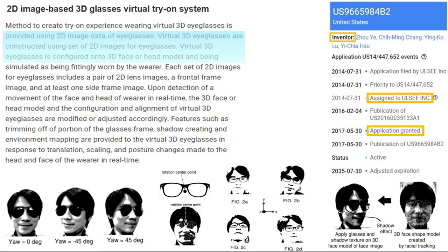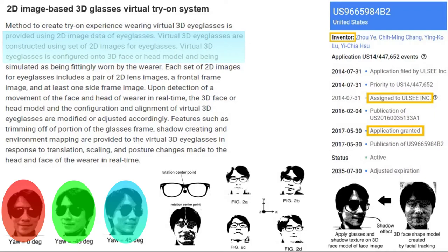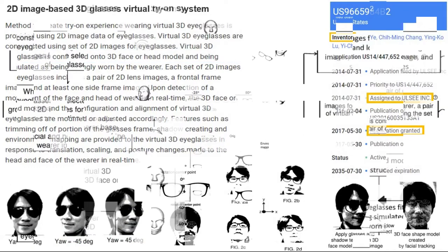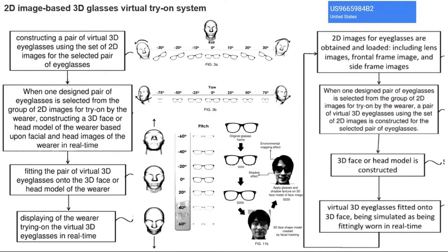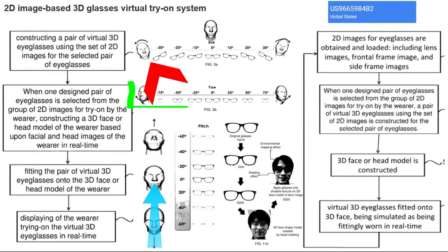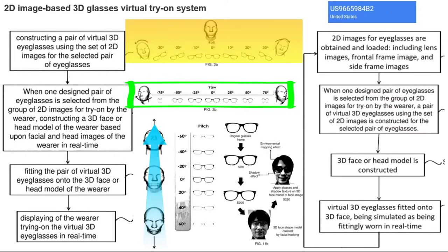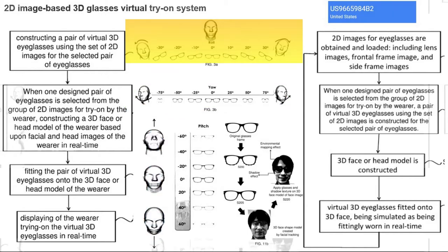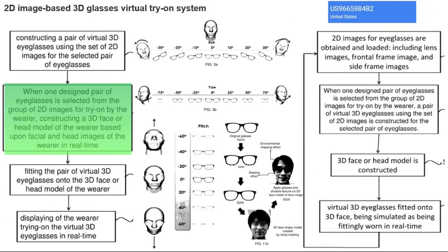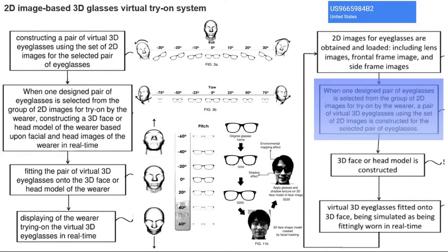The first step is to collect multiple 2D face images at different angles. 3D eyeglasses are modified according to the movement of the face. In real time, effects on eyeglasses are merged with the head movement. There are multiple inventive steps mentioned in this patent, covering broader aspects of the patent for virtual try-on.